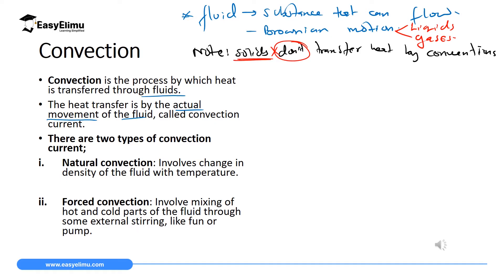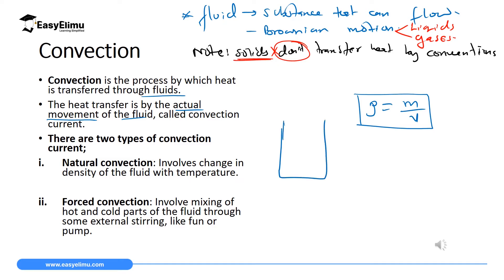We have two types of convection current. The first one is natural convection. In natural convection, it involves a change in density of a fluid with temperature. Remember, density is influenced by mass per unit volume. If you have a fluid inside a container — let's say cold water — and then you introduce some heat at the base, what will happen?